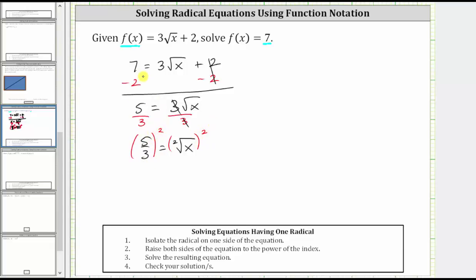The square of five thirds is equal to five squared over three squared, which gives us 25 ninths. On the right side, squaring and a square root, the right side simplifies perfectly to just x. So our solution is x equals 25 ninths.